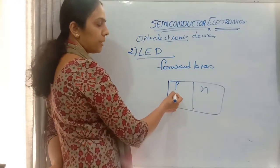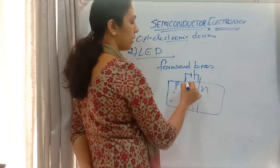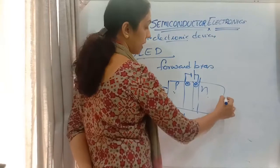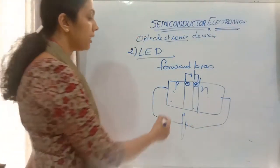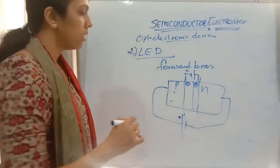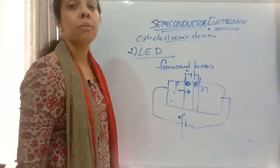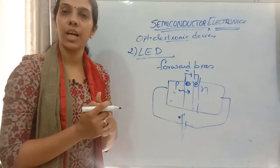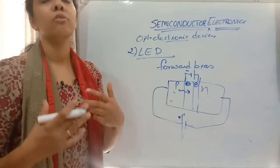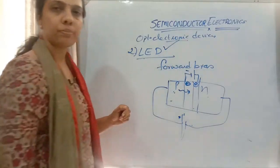In the LED, holes are majority carriers on the P side and electrons are majority carriers on the N side. A negative charge forms on the P side and a positive charge on the N side due to the potential barrier. When connected in forward bias — P to positive and N to negative — the barrier potential reduces. Holes move toward the N side and recombine with electrons, releasing energy in the form of photons, emitting light.